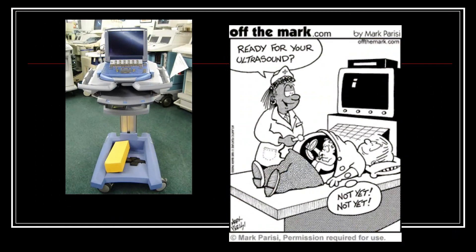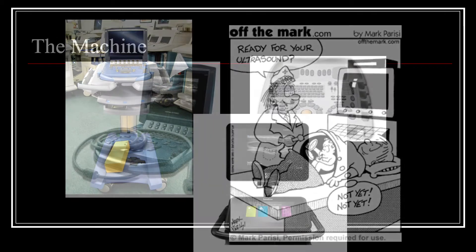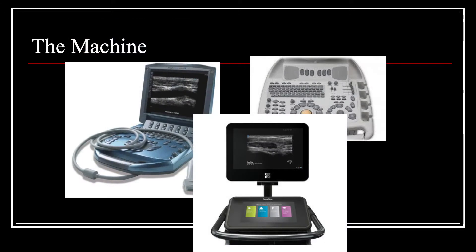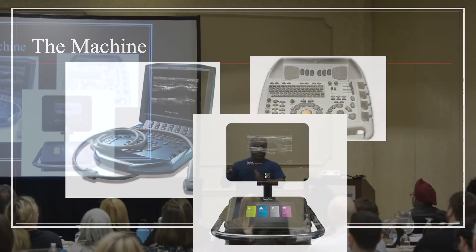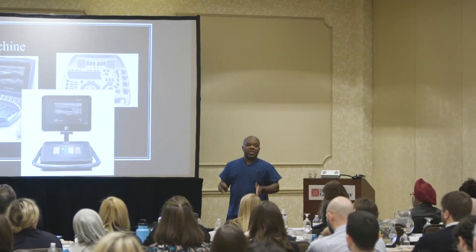This is the machine I trained on back in 2006 at Mount Sinai — I'm pretty sure it's in a garbage dump by now. These are the different types of machines that are out there. I leave this slide up to prove a point: do not memorize the machine, because you might move around from different sites, and the place where you train might be different from where you're going to work. Don't memorize the machine.